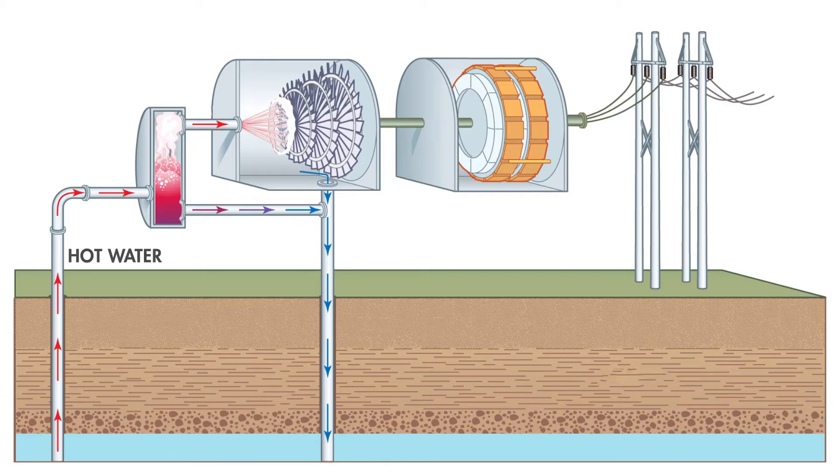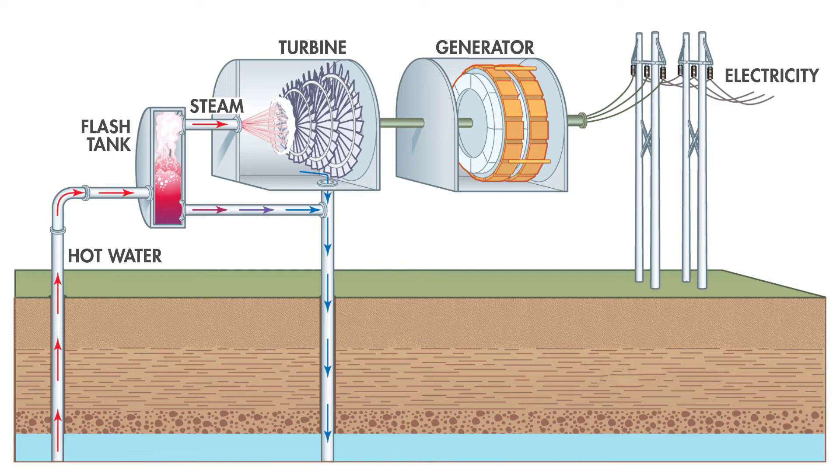The hot water first brought to the surface and then it's converted into steam. Then the steam strikes the turbine blades causing it to rotate. Since the generator is coupled with the turbine shaft, it also rotates with the turbine and produces electricity.